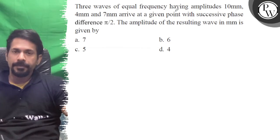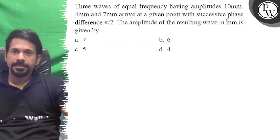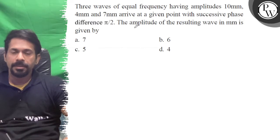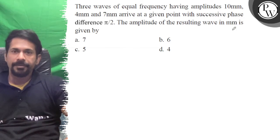Three waves of equal frequency having amplitudes 10, 4, and 7 arrive at a given point with a successive phase difference of pi by 2. The amplitude of the resulting wave is...